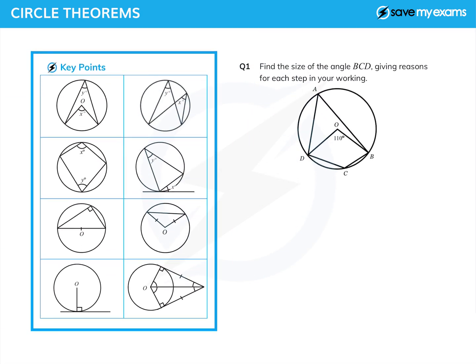Here's the first one: find the size of the angle BCD — that's this one down here — giving reasons for each step in your working, and that's where the green lines come in. You do need to know the reasons. I don't think I can get there directly because this is not a cyclic quadrilateral, but I could find the angle BAD first. Often with these questions it is a case of just finding angles that you can.